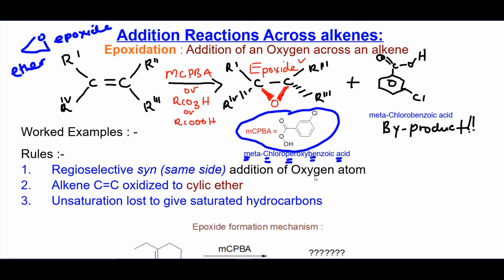So mCPBA simply puts an epoxide, puts an oxygen across the double bond. And using one of the pi bonds, it's going to be syn addition, that's the regioselectivity. Same side addition, the oxygen's added on either the top face or bottom face.